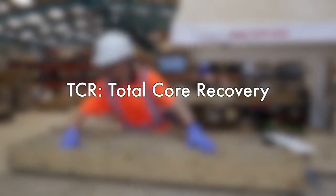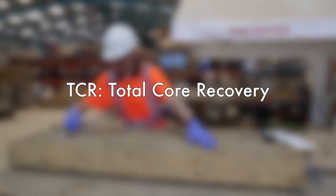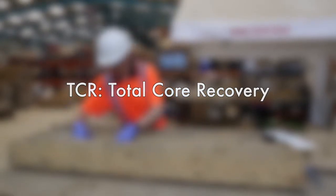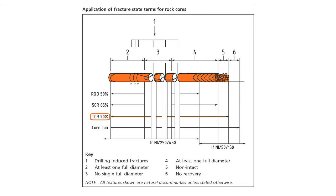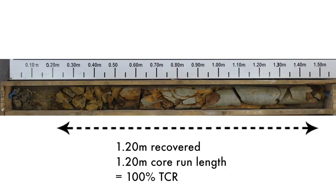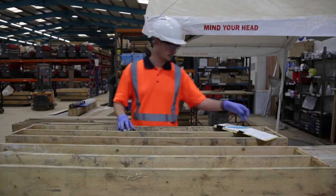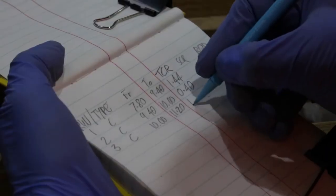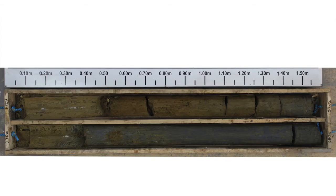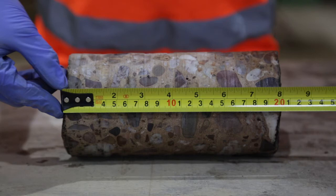Total Core Recovery, TCR, is defined as the total length of sample recovered, expressed as a percentage of the core run length. TCR provides a record of the proportion of the core recovered and includes both solid and non-intact core. Where the core is fragmented, place the pieces back in the box as best you can. TCR must be recorded for all core materials including soil, concrete and brickwork.